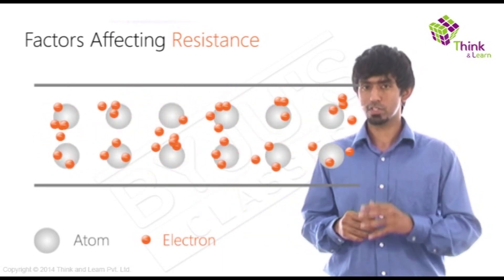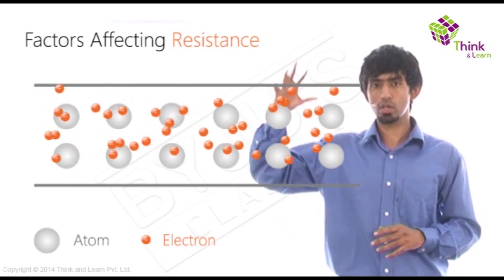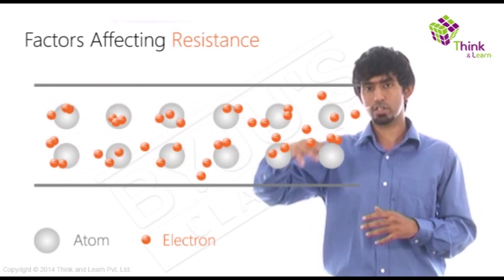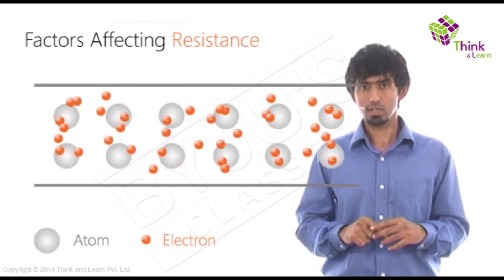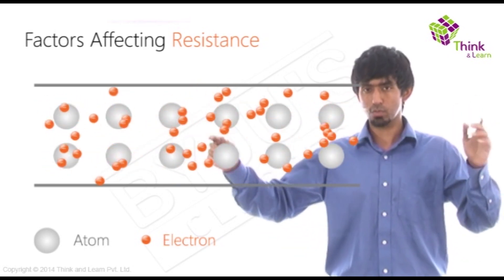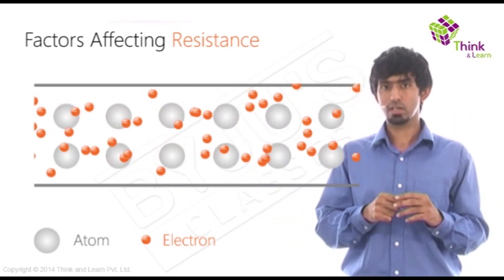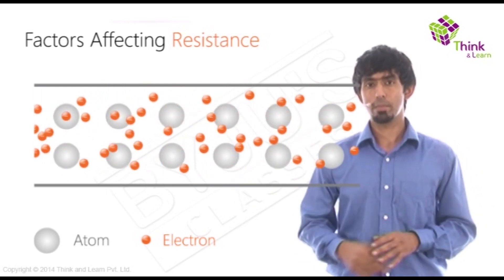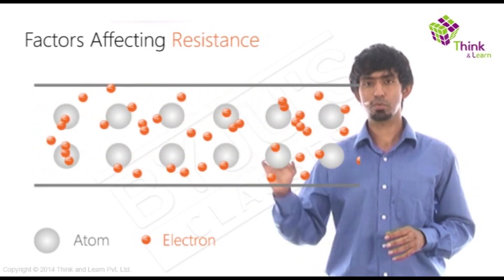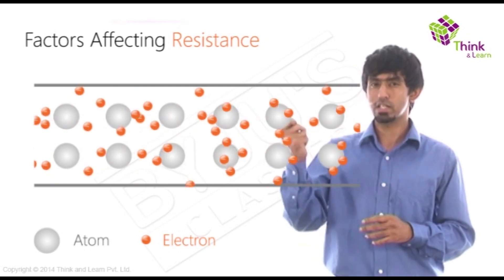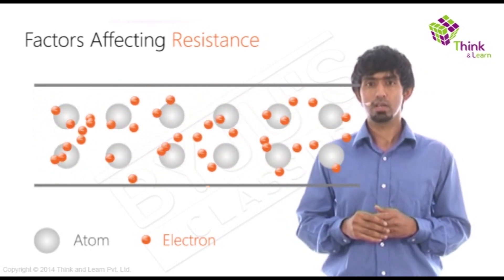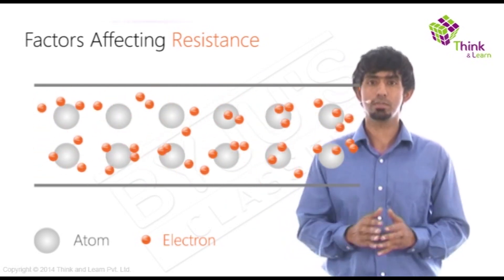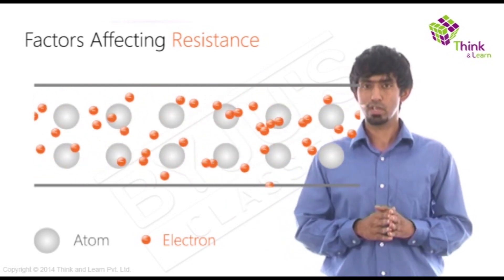As you begin to imagine this, look at all the positive charges and a sea of electrons flowing freely through them in random directions. The moment you create a potential difference, all the electrons are going to try and go in one particular direction. But the protons don't want them to go — they attract these electrons and try to trap them into the atom, causing the electrons to lose kinetic energy. And when that is lost, the current is going to reduce.